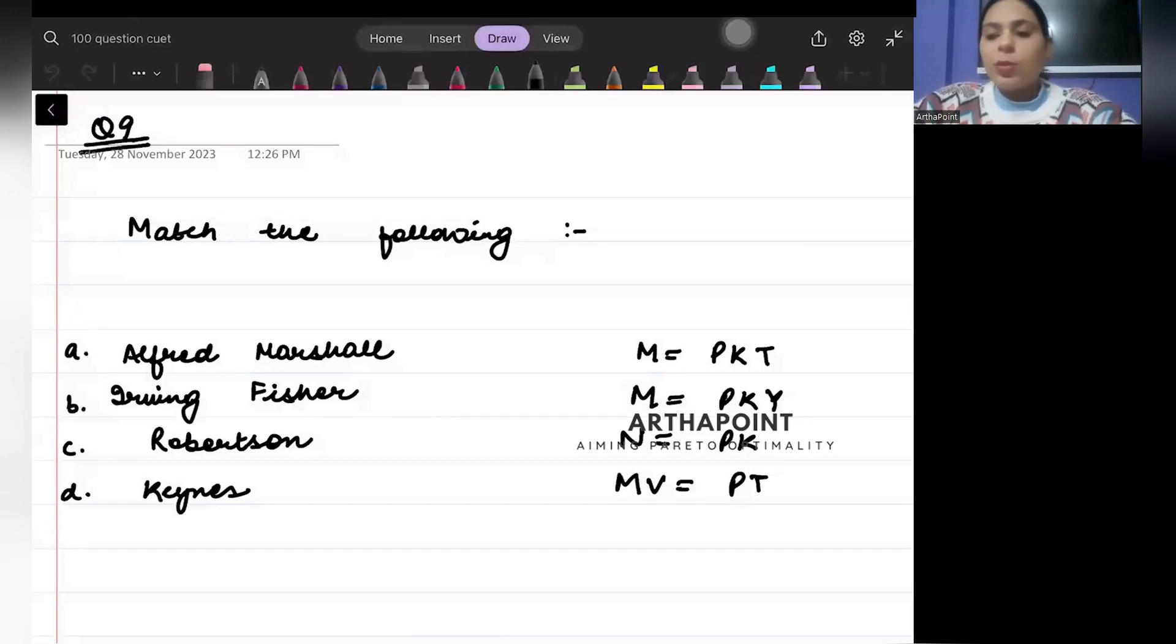Hello everyone, good evening. Welcome to another day of our CUET 100 question test series. The question that we are taking for today is question number nine, day nine. This is a macroeconomics question.